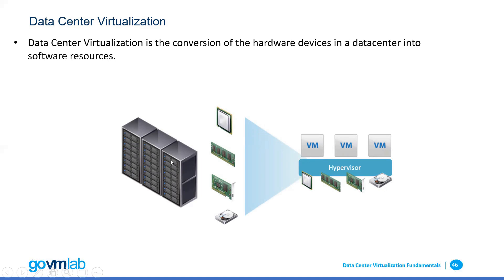If you see here, we have a physical server — a physical box having its own physical CPU, memory, RAM, and hard drive. But now with virtualization, that physical server has been transformed or converted into a software entity called a virtual machine. This virtual machine will have its own memory, CPU, hard drive, and network adapter, but those will be software entities. That's the magic of virtualization.